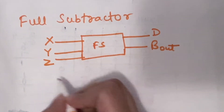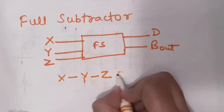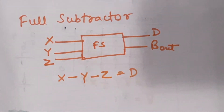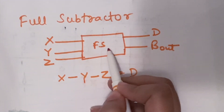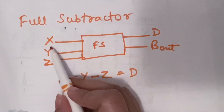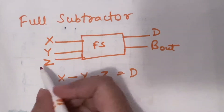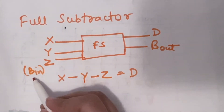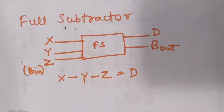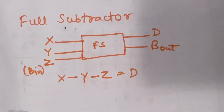The full subtractor finds the difference of x minus y minus z and gives the difference output. The block diagram consists of a single square box labeled FS (full subtractor). x, y, and z are the three single-bit inputs. Z is also considered the borrow-in (B_in). D is the difference output and B_out is the borrow out.